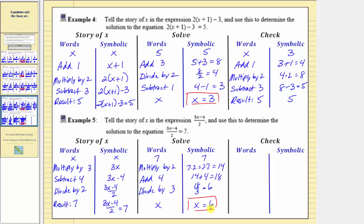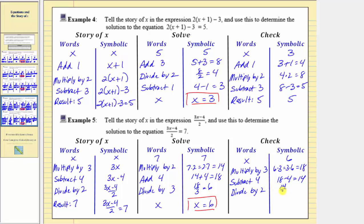Finally, we'll check our solution by writing the story of x when x equals six. So x is equal to six. Next, we multiply by three: six times three equals eighteen. Subtract four: eighteen minus four equals fourteen. Fourteen divided by two equals seven, which is good news because we want the result to be seven, which is what we have, verifying our solution is correct. I hope you found this helpful.